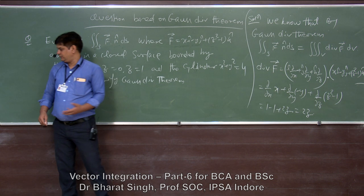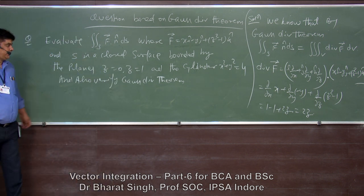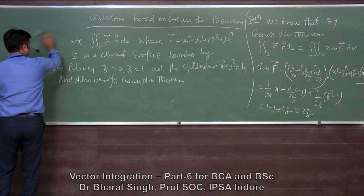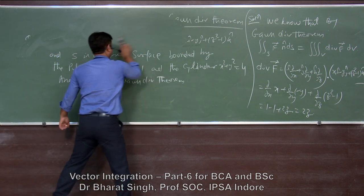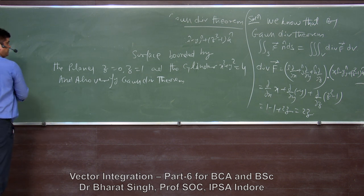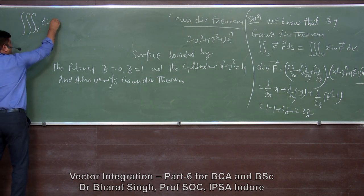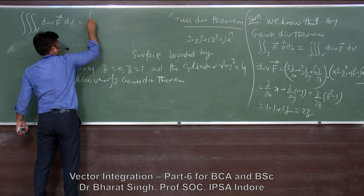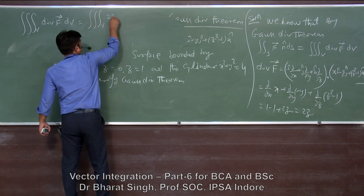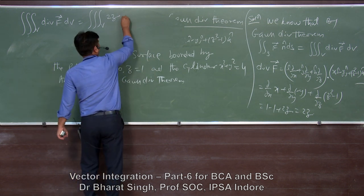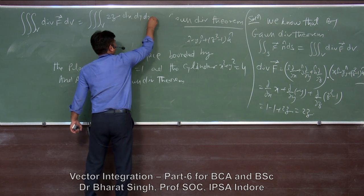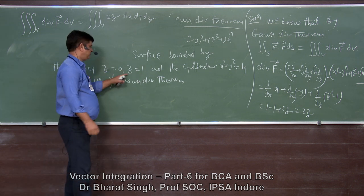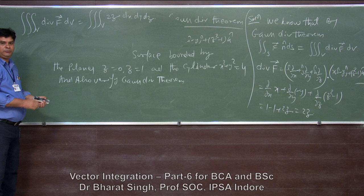So the divergence of F is 2z. Putting this into the volume integral, we get the triple integral of 2z dx dy dz. The z-value is given from 0 to 1. For the cylinder x² + y² = 4, z varies from 0 to 1.